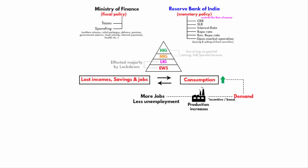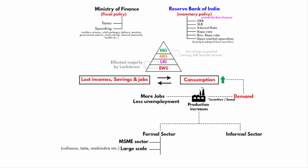Now let's look at the business side. In the formal sector, the government of India categorizes companies as micro-enterprise, small enterprise, and medium enterprise — together known as the MSME sector. Then there are large businesses like Reliance, Tata, Mahindra, etc. There is also the cottage industry — a business or manufacturing activity carried on in people's homes — which is part of both formal and informal sectors. The informal sector comprises almost 90% of the Indian economy.